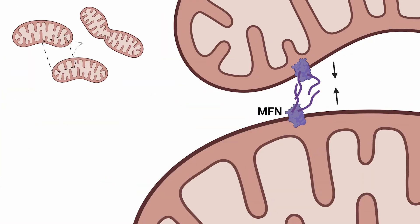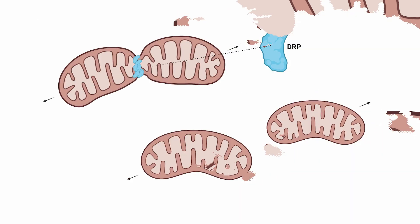The first, MFN — known as mitofusin — is a protein used by the mitochondrion to fuse with another, so fusion. The second, DRP, or dynamin-related protein — well, you don't need to know the names — allows mitochondria to undergo fission, or split apart.